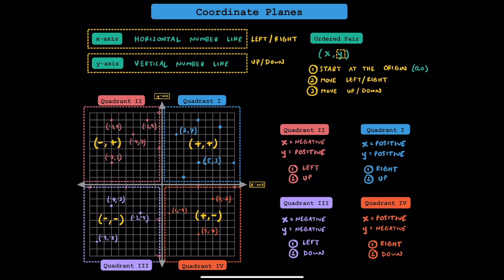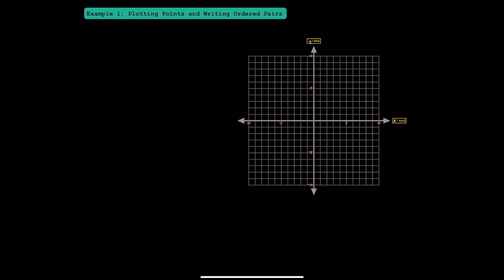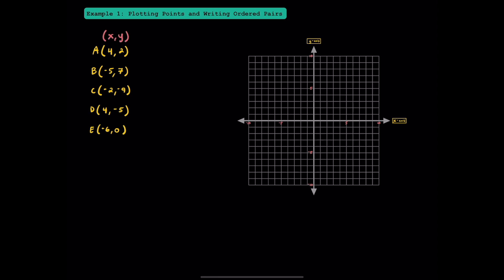Now that we've gone over some vocabulary and background, let's do some math together. In example 1, we're going to practice plotting points and writing ordered pairs. Remember that each ordered pair is going to be (x, y). For point A, the 4 tells us we're going to be moving 4 units to the right, which is a positive 4, then 2 units up, which is a positive 2. Here's where point A is located — we describe this as being in quadrant 1.